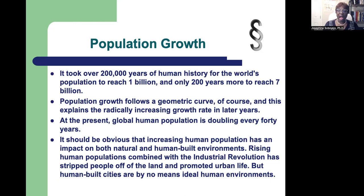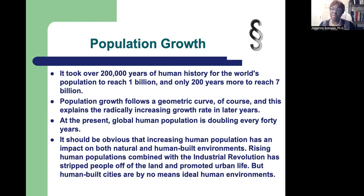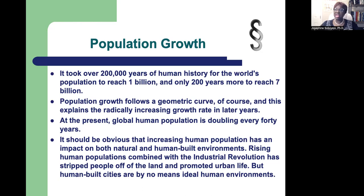Rising human populations combined with the industrial revolution have stripped people off the land and promoted urban life. But human-based cities are by no means ideal human environments. When you talk about balance the way God created it — do you think it's by mistake or coincidence that when God created Adam and Eve, he put them in the Garden of Eden? A garden, surrounded by other species, so that they can give us something and we can give them something, and there is balance in nature and the environment.